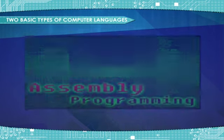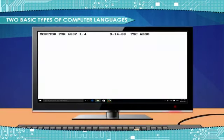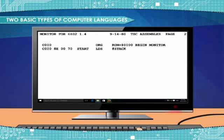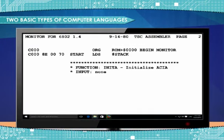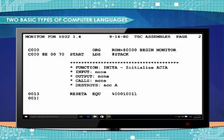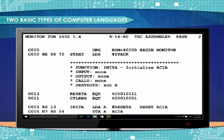Assembly language is a user-friendly language. It was developed for the convenience of machine language programming. Assembly language uses symbolic codes, making it easier to work with than binary machine language.